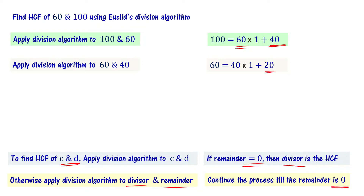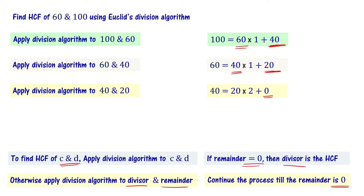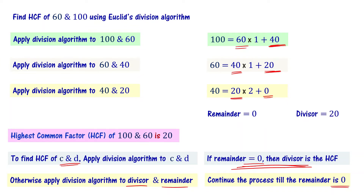Since remainder 40 is not 0, apply the division algorithm to divisor 60 and remainder 40: 60 equals 40 times 1 plus 20. The remainder is 20, also not equal to 0. Apply again to 40 and 20: 40 equals 20 times 2 plus 0. The remainder is 0, so the divisor 20 is the HCF. 20 is the highest common factor of 100 and 60.